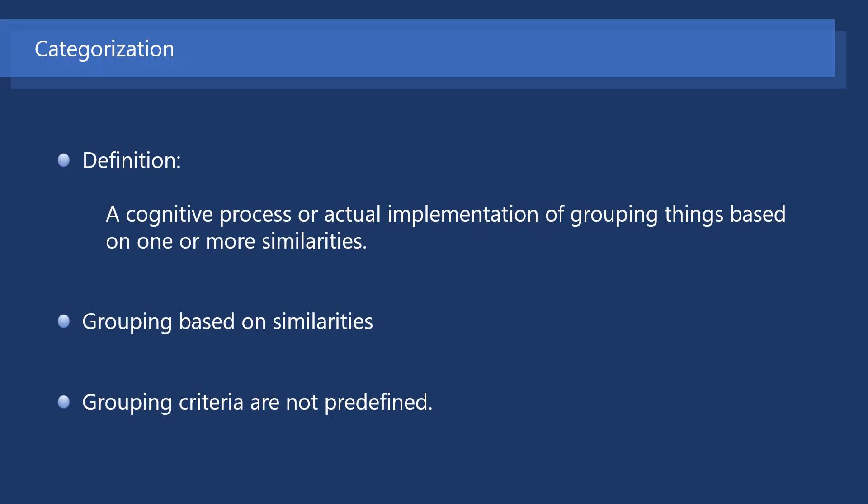Categorization is a cognitive process or actual implementation of grouping things based on one or more similarities. In our daily conversation, categorization is not explicitly distinguished from classification. However, in the field of organizational behavior, classification means any grouping based on predefined and explicit criteria, such as gender or nationality. On the other hand, categorization refers to grouping based on similarities, and grouping criteria are not predefined. Therefore, categorization is more dependent on our subjectivity, and the grouping criteria can emerge in the process of categorization.